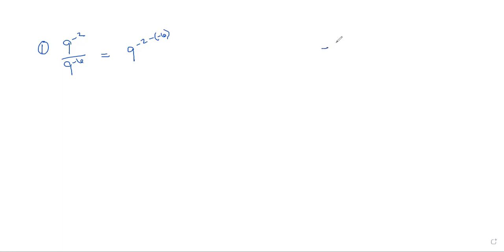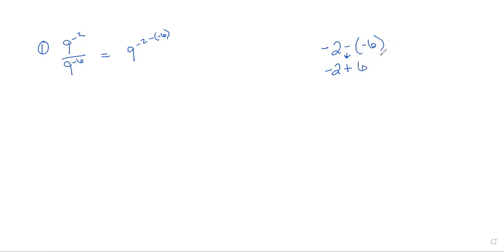Kind of a side note: anytime we subtract and we have negative numbers, it's easier to use the additive inverse. So we keep the first number the same, change subtraction to addition, and change the sign of the number that followed that subtraction sign. So instead of a negative 6, it's going to be a positive 6. So these two equations are exactly the same — negative 2 minus negative 6 is the same as negative 2 plus 6.